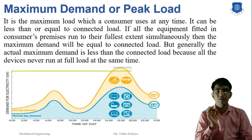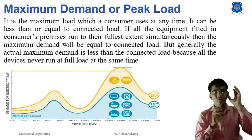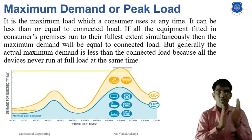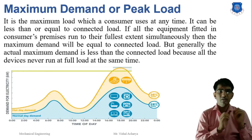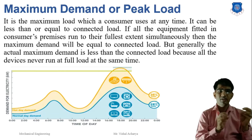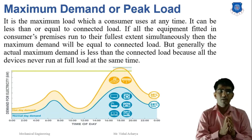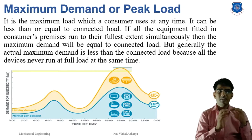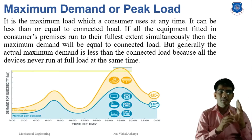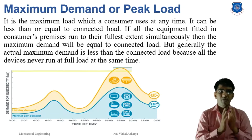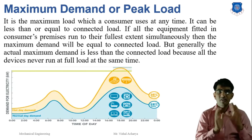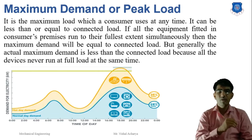Next is maximum demand or peak load. It is the maximum load which a consumer uses at any time. It can be less than or equal to the connected load — for a connected load of 1745 watt, the maximum demand is always less than or equal to 1745 watt. If all equipment runs simultaneously at full capacity, maximum demand equals connected load. But generally, actual maximum demand is less because all devices never run at full load at the same time.